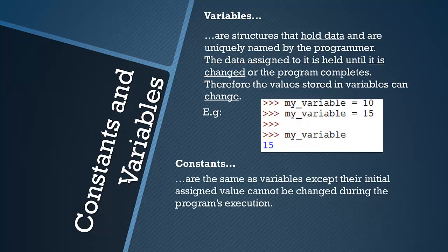Constants would be the same as variables, such as they can hold data and are uniquely named, but their values cannot be changed. Unfortunately there's no real way of showing this as an example because in Python constants don't actually exist, but they are used in other languages. So constants can't change, variables can.